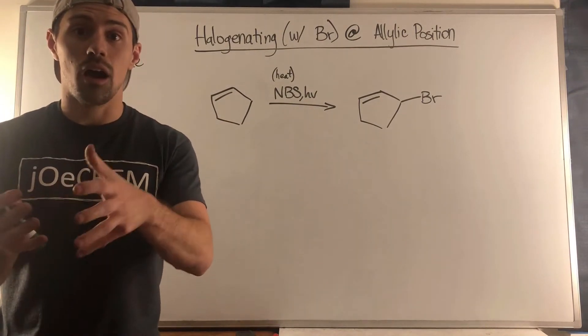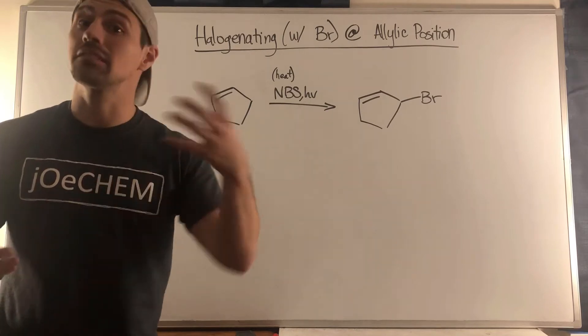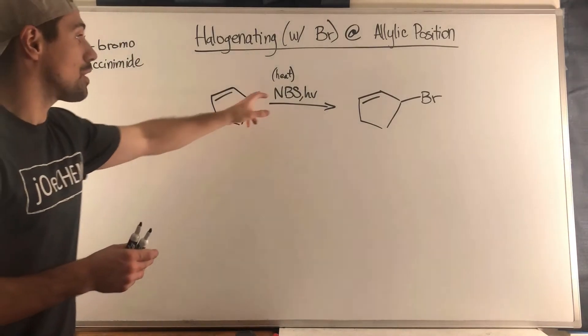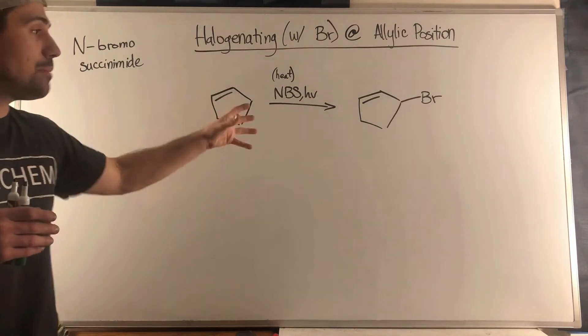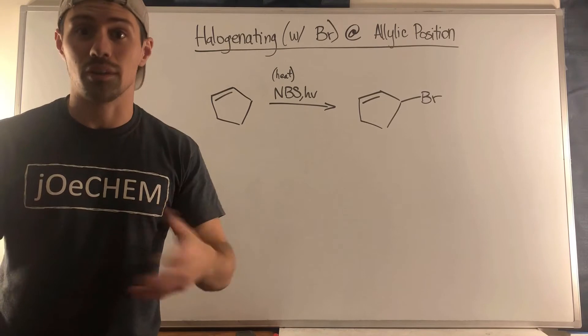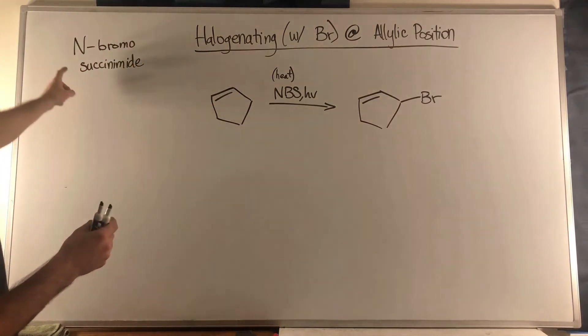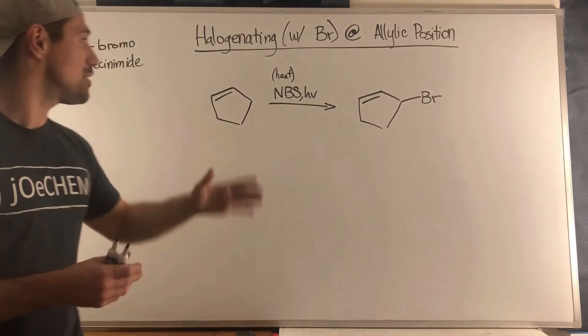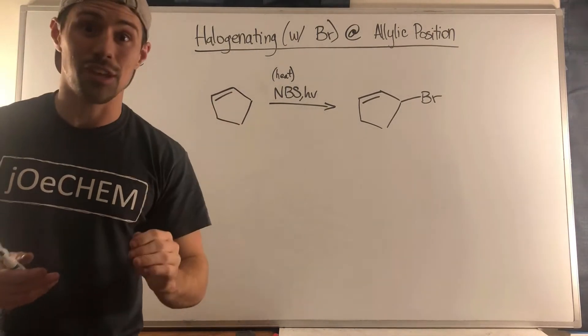Since the free radical halogenation is not an option for us to brominate the allylic position, what we can do is use a reagent called NBS, and specifically you use NBS and light - you may or may not have heat present. What does NBS stand for? It's a crazy mouthful: N-bromo succinamide. You don't need to know how to say that. If you can say NBS you're in good shape, just in life and in organic chemistry.